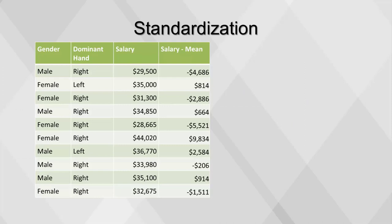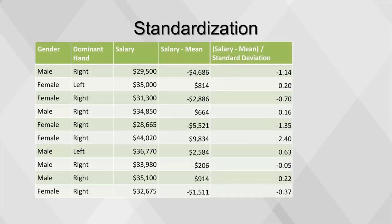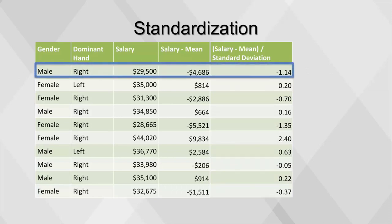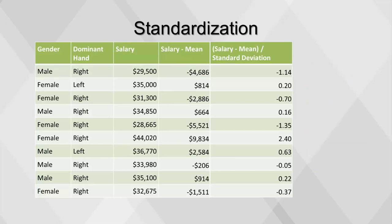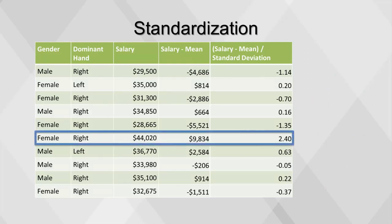Mean and standard deviation describe the distribution of a set of numbers, but to compare numbers within an entirely different set, we can standardize the values using the z-score. To standardize a value, subtract the mean and divide by the standard deviation. For example, the salary of $29,500 divided by the standard deviation of 4,103 gives a z-score of negative 1.14, interpreted as: $29,500 is 1.14 standard deviations lower than the mean. The largest salary, $44,020, is actually very far away from the mean. We can use this standardized value to compare the high-performing bank teller to the high performer of another profession.